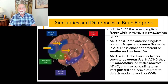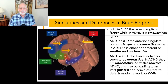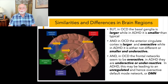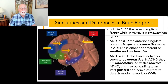In ADHD, this may be leading to an unregulated default mode network toward the rear part of the brain, which is involved in mind-wandering, daydreaming, and mind-blanking. So the default mode network is much more likely to be involved in ADHD than in OCD. Even though similar brain regions are involved in both disorders, the findings are opposites: in OCD, larger and overactive; in ADHD, smaller and underactive.